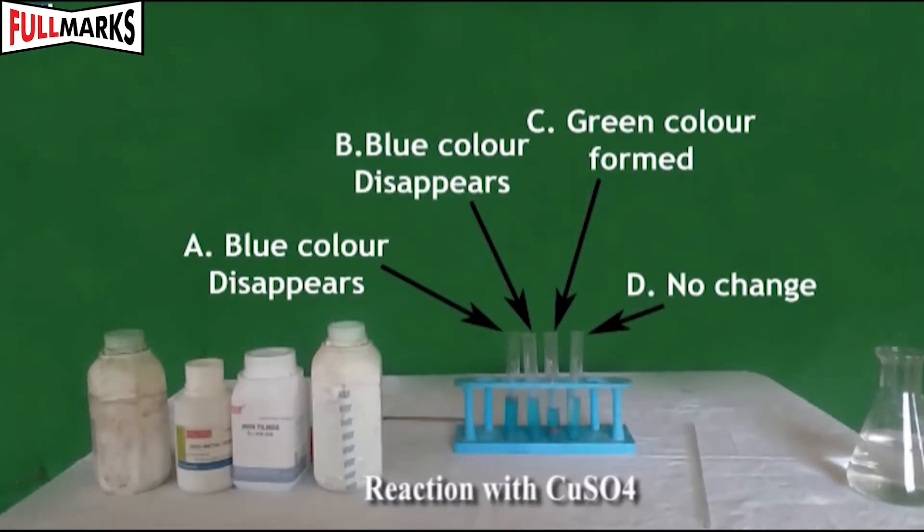Now in test tube A, the blue solution of CuSO4 becomes colourless. In B, the blue solution of CuSO4 becomes colourless. In C, the blue solution becomes green. And finally in D, there are no changes.